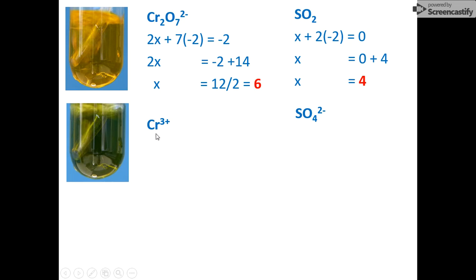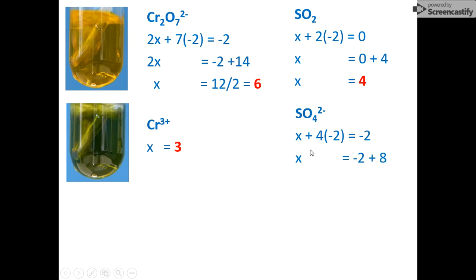Looking at the products: the oxidation number of chromium in Cr3+ uses rule four — the value of the charge equals the oxidation number — so it's plus three. For sulfate, applying rule six because it's a polyatomic ion, the sum of all oxidation numbers equals minus two. With four oxygen atoms each at minus two, solving gives the oxidation number of sulfur as plus six.